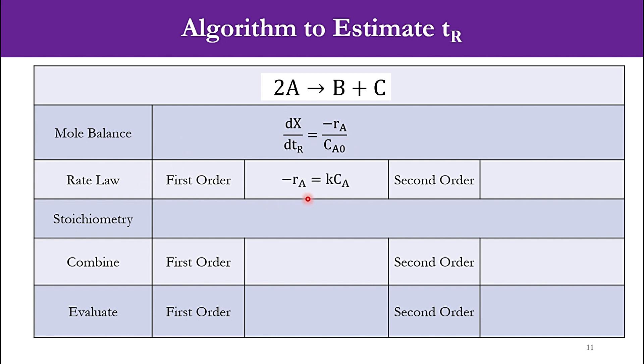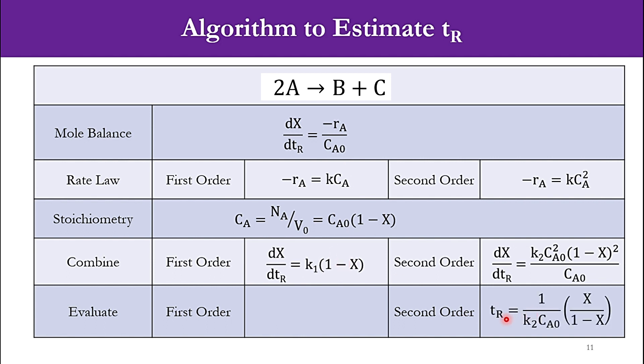For first order, the rate law will be -RA equals kCA. For second order it's -RA equals kCA². For stoichiometry it remains the same: CA equals CA0(1-X). For second order we already saw that equation. For first order it will simply be k₁ times (1-X), because CA equals CA0(1-X) and accordingly that CA0 will be cancelled out. So it will be k₁ times (1-X).